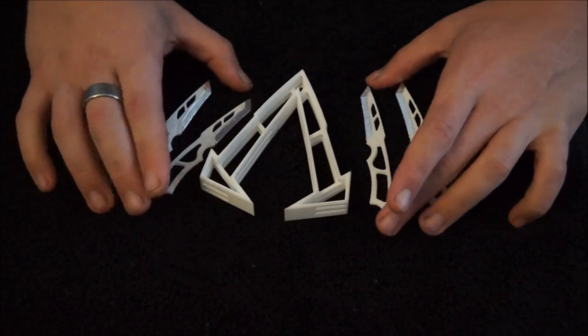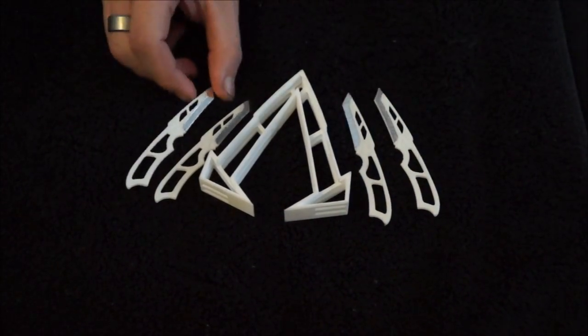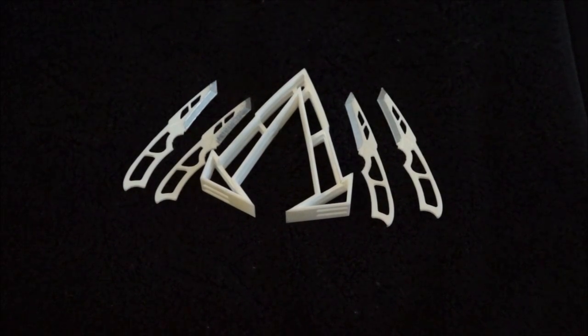This is pretty much how it came from Shapeways with the exception that I added a little bit of foil tape to these edges just to highlight them. But obviously you can sand these down, you can do rub and buffs, you can add whatever foils you'd like.